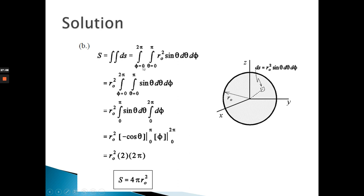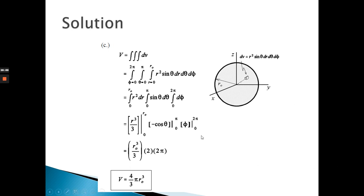We integrate φ from 0 to 2π and θ from 0 to π. Pulling r₀² out, we integrate sinθ dθ from 0 to π and dφ from 0 to 2π. Integrating sinθ gives 2, and integrating dφ gives 2π, so S equals r₀² × 2 × 2π equals 4πr₀².